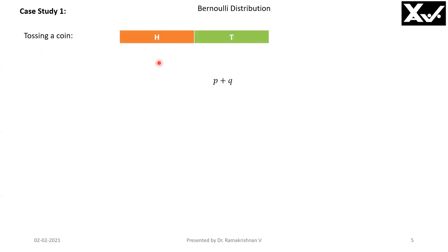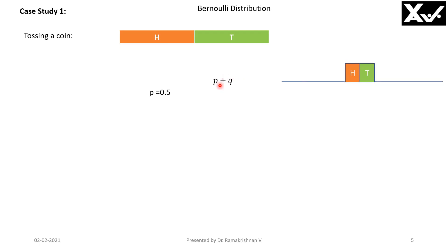Consider tossing a coin — it will either fall head or tail. Total number of events is two. So probability of getting a head is 0.5, because out of two total occurrences, head occurs once: one out of two. Probability of head is P = 0.5, probability of tail is Q = 0.5. Coefficient of P is one, coefficient of Q is one, total events two, so 1/2 and 1/2. Total probability is one.